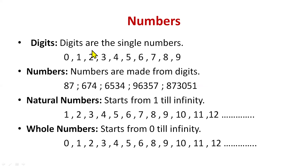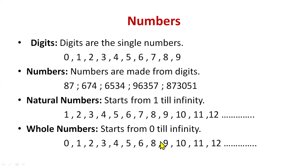Now, what are natural and whole numbers? Natural numbers start from 1 and go to infinity. Whole numbers start from 0 and go to infinity. For whole numbers, you can remember from the 'O' in 'whole' that it always starts from zero.